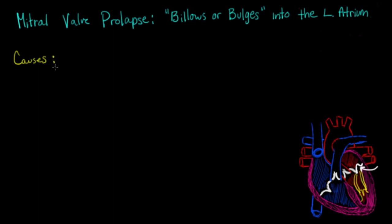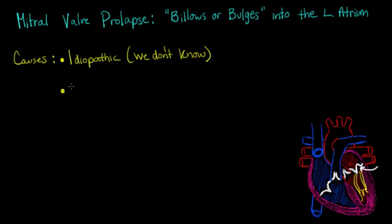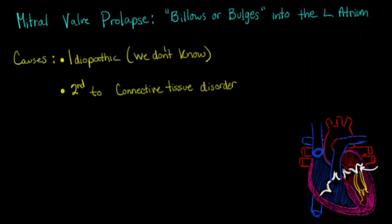Let's talk about the causes of mitral valve prolapse. One major cause is actually idiopathic — meaning we don't really know what causes it. Another cause is when mitral valve prolapse occurs secondary to a connective tissue disorder. A connective tissue disorder means you have a problem making proper connective tissues, which make up some arteries and body tissue. Certain conditions like Marfan syndrome or Ehlers-Danlos syndrome can actually cause mitral valve prolapse.